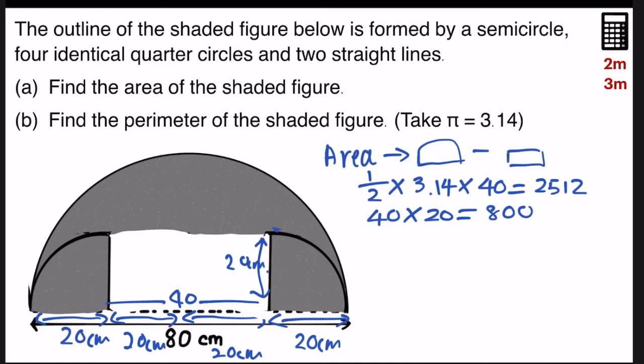Now, the last step, I just need to subtract the rectangle from the semicircle. So I'll take 2,512, subtract 800, I get 1,712. And that's the answer for A.